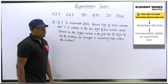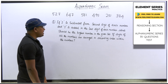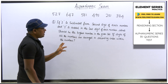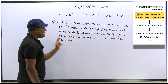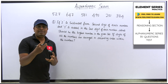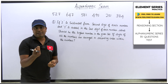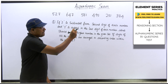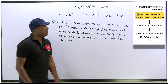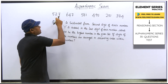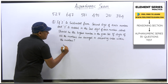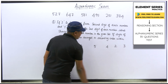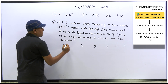Question number 2: If 2 is subtracted from the second digit of each number and 1 is added to the last digit of each number, what should be the highest number if the digits of all numbers are arranged in ascending order? Unlike the previous question which had one operation, here we have two operations — subtract 2 from the second digit and add 1 to the last digit. The first digit stays as it is.